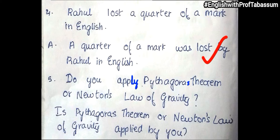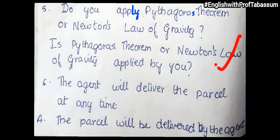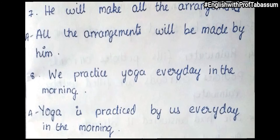'Do you apply Pythagoras theorem or Newton's law of gravity?' becomes 'Is Pythagoras theorem or Newton's law of gravity applied by you?' Next: 'The agent will deliver the parcel at any time' becomes 'The parcel will be delivered by the agent.' And 'He will make all the arrangements' becomes 'All the arrangements will be made by him.'